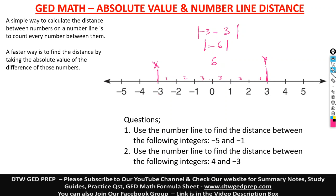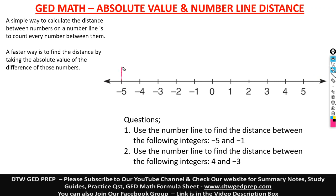Let's look at these two questions. The question says: use the number line to find the distance between the following integers. We have negative 5 and negative 1. This is a tricky question because neither point is at zero — that's why the formula using absolute value is quite important.